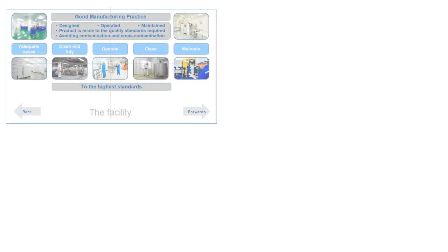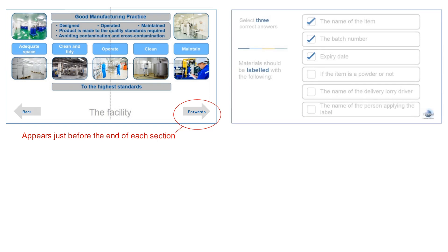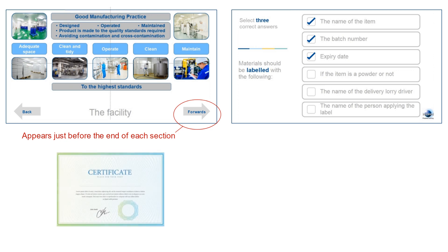The software is designed so delegates must complete each section of each chapter before they can move on, and there is an assessment at the end of each chapter to check understanding. On successful completion of the course, a certificate is available to download.